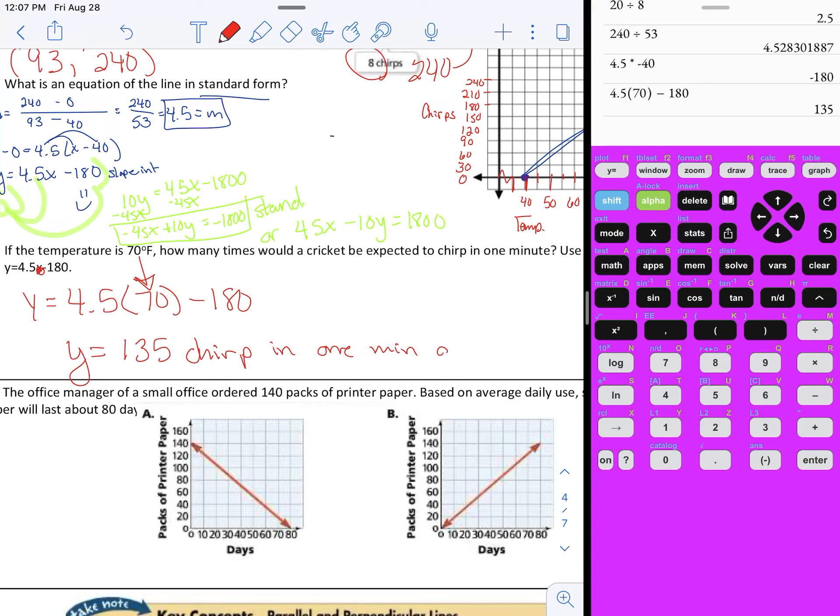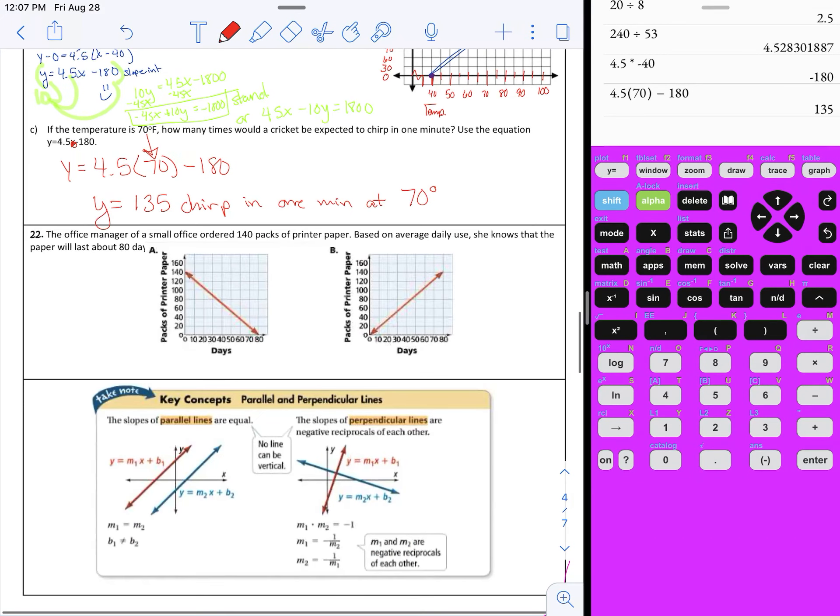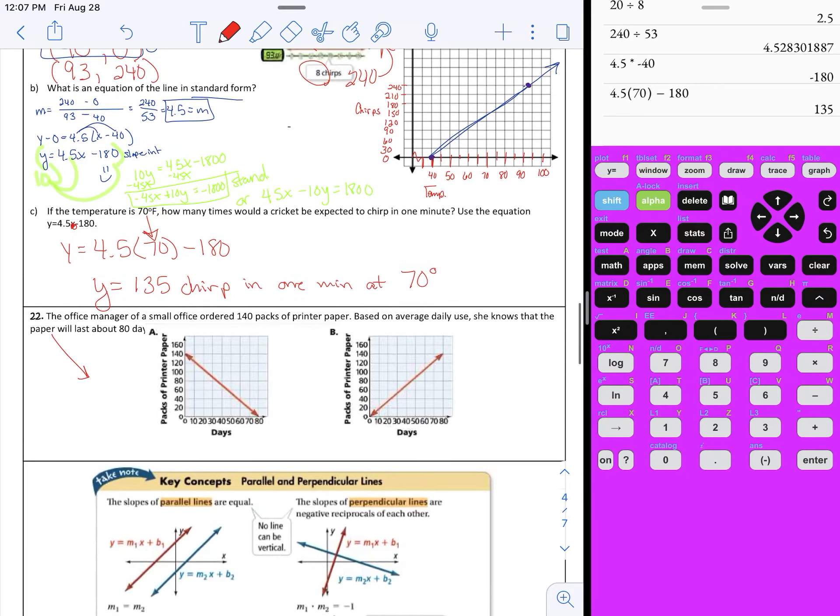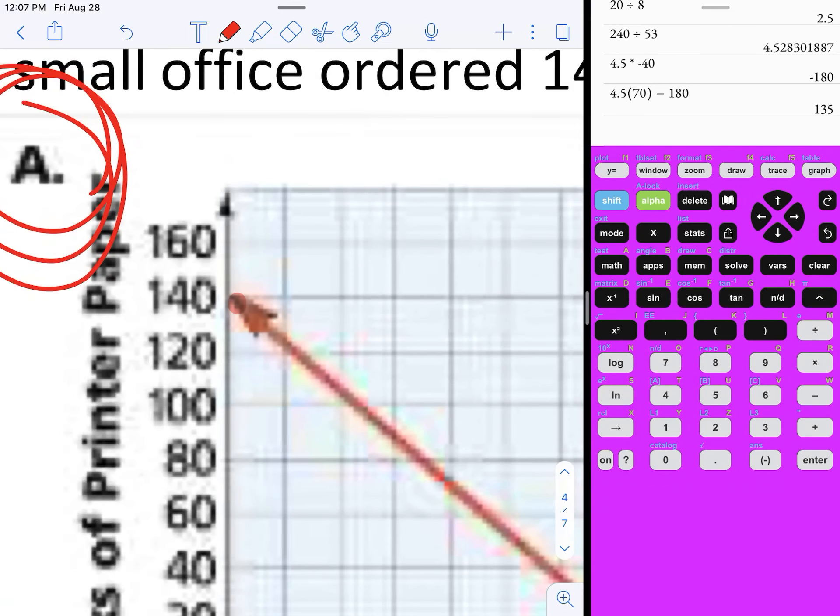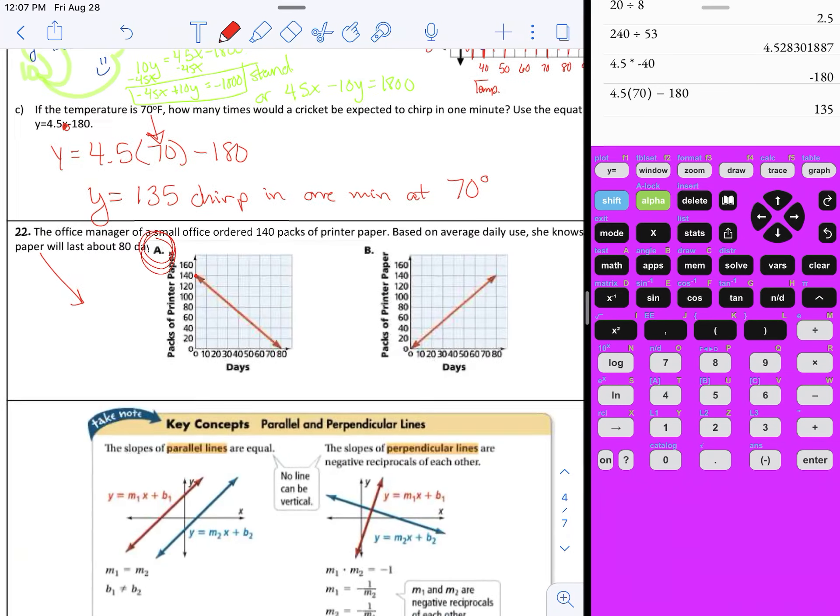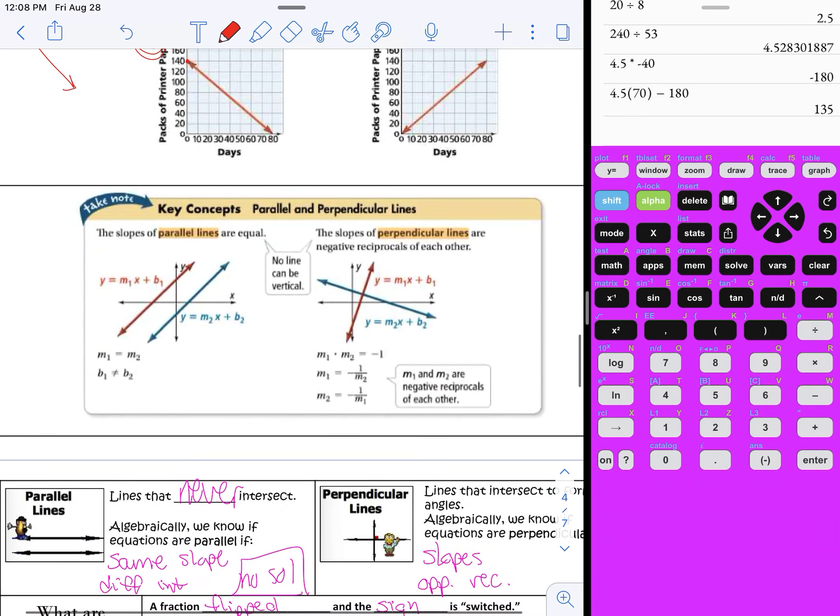This last one is just multiple choice. The manager of a small office is going to order 140 packs of printer paper. Based on the average daily use she knows that the paper is going to last about 80 days. It's going to go down because we're going to use paper. Which one of these represents how much she has left? It would definitely be A because it's going down and starting at 140. However, I'm going to tell you that should have been a dot not an arrowhead.